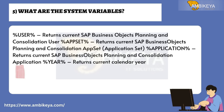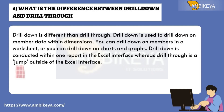Question 5: What are the system variables? %USER% returns the current SAP Business Objects Planning and Consolidation user. %APPSET% returns the current SAP Business Objects Planning and Consolidation application set. %APPLICATION% returns the current SAP Business Objects Planning and Consolidation application. %YEAR% returns the current calendar year.